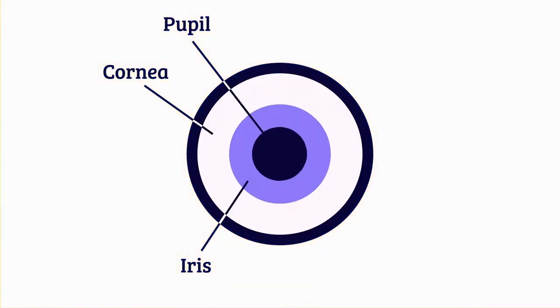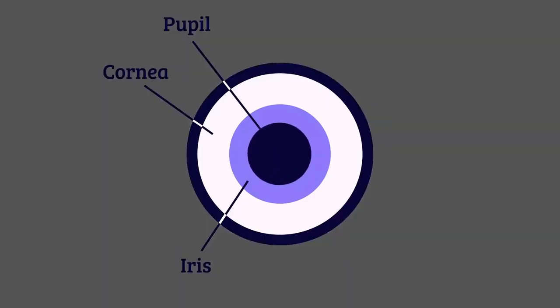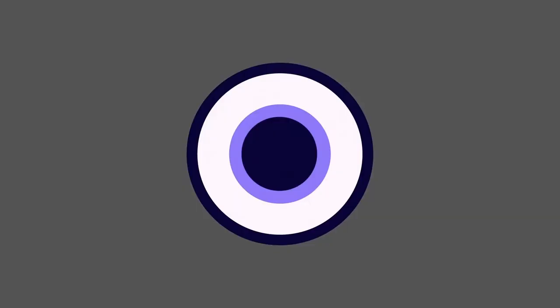In bright light, the iris narrows the pupil, reducing the amount of light that enters the eye. In dim light, the iris widens the pupil to let in more light. All of this happens automatically.